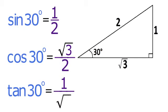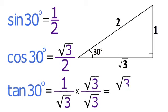As with other values that contain a radical in the denominator, this value can be rationalized by multiplying both the numerator and the denominator by radical 3. This results in the value radical 3 over 3.